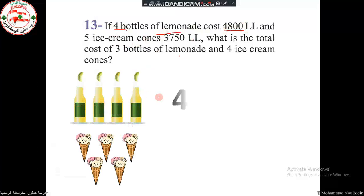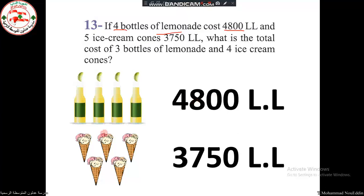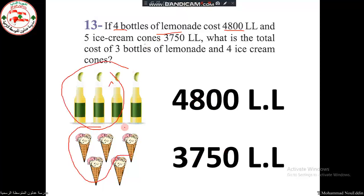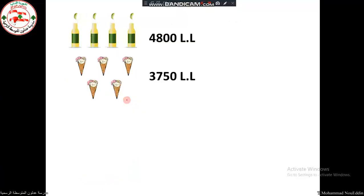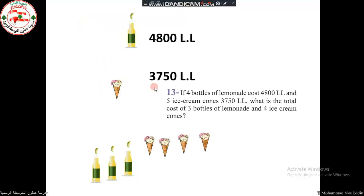The lemonade bottles cost 4,800 Lebanese lira, and the cones cost 3,750 Lebanese lira. The question wants the cost of three bottles and four cones. So I need to calculate the price of these.